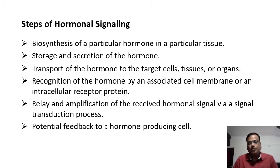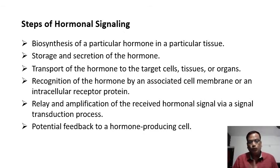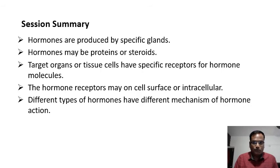The steps of hormone signaling generally include: biosynthesis of a particular hormone in a particular tissue, storage and secretion by that gland, and transportation through the blood to target tissues or organ cells. Recognition of the hormone is done by receptors — either on the cell surface or inside the cytoplasm. Once receptors bind to the hormone molecule, there is a relay and amplification of the signal, followed by a feedback mechanism to the organ or tissue producing the hormone.